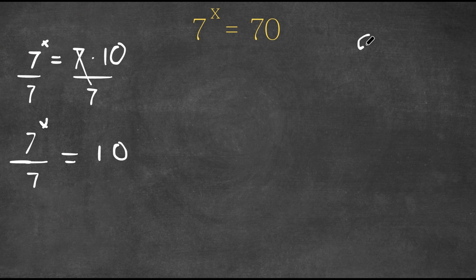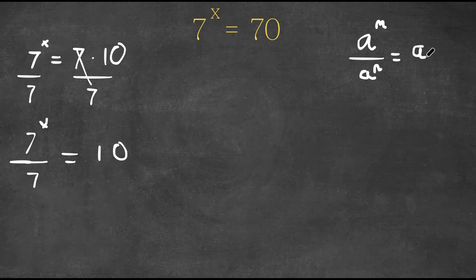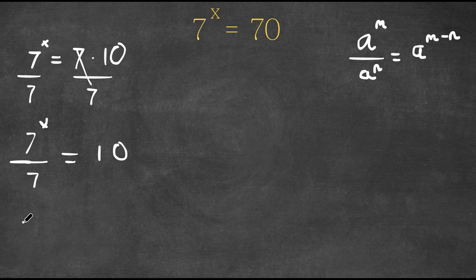Now if we have something in the form a to the power of m over a to the power of n, this is simply equal to a to the power of m minus n. So 7 to the power of x over 7 would be 7 to the power of x minus 1, and now this is equal to 10.